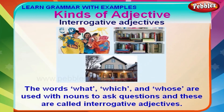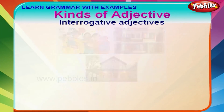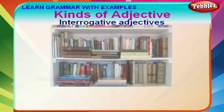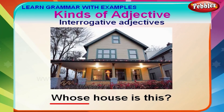The words what, which and whose are used with nouns to ask questions, and these are called interrogative adjectives. What color is it? Which book do you want? Whose house is this?